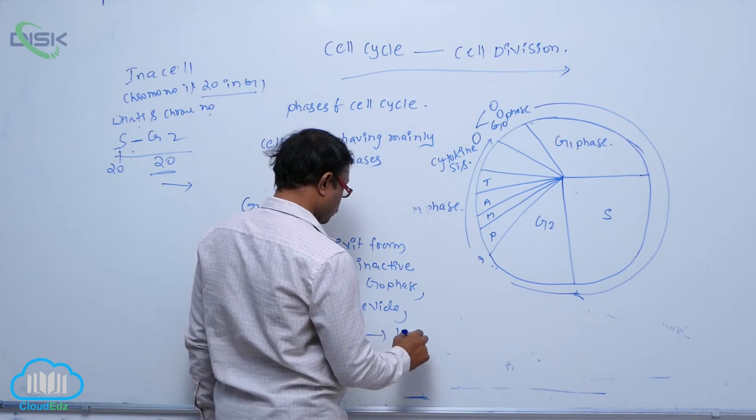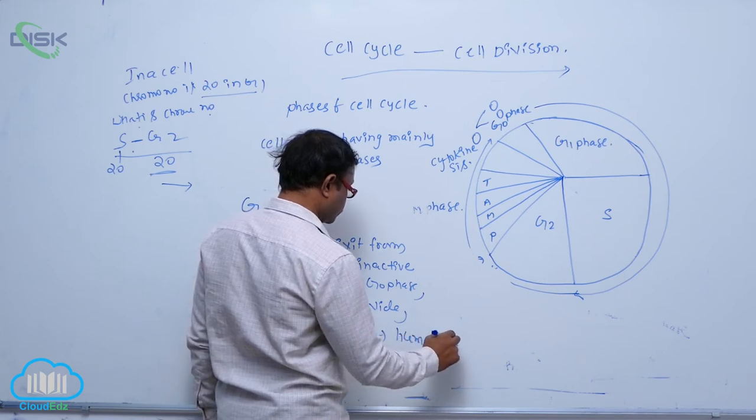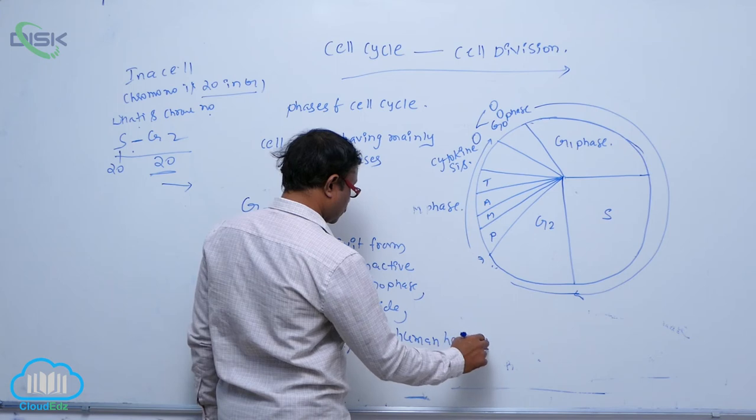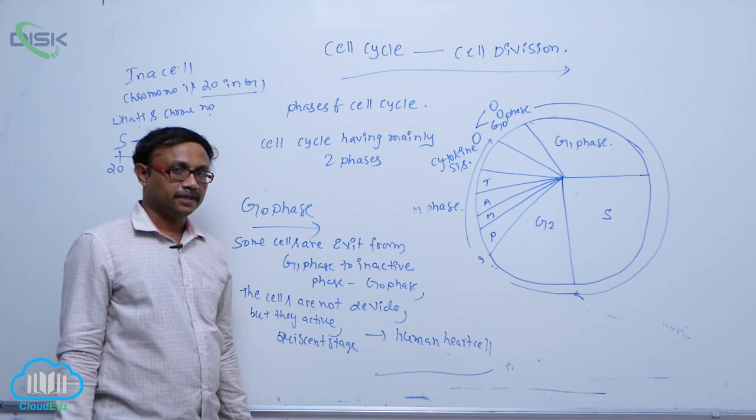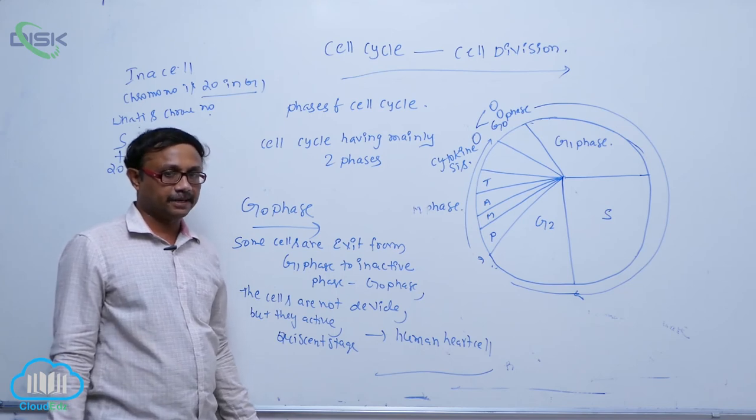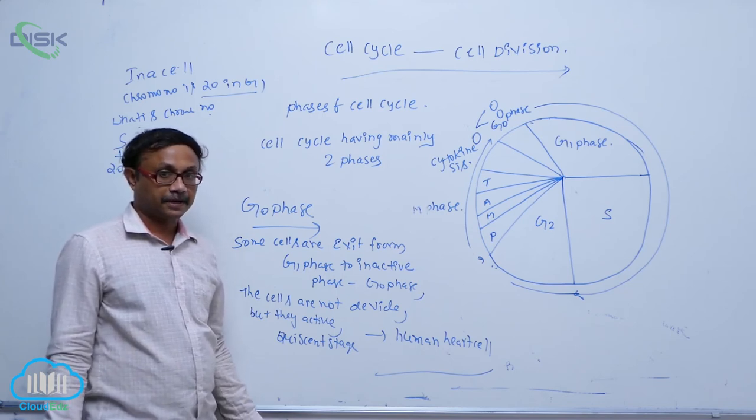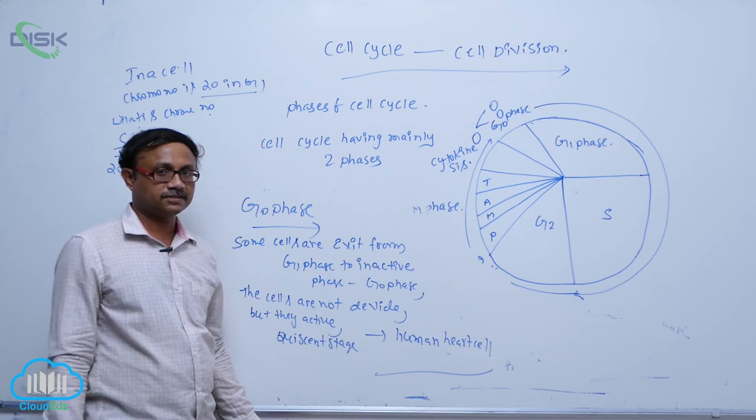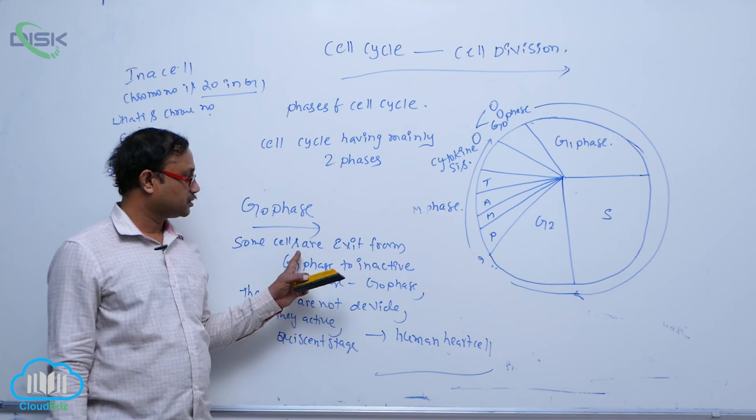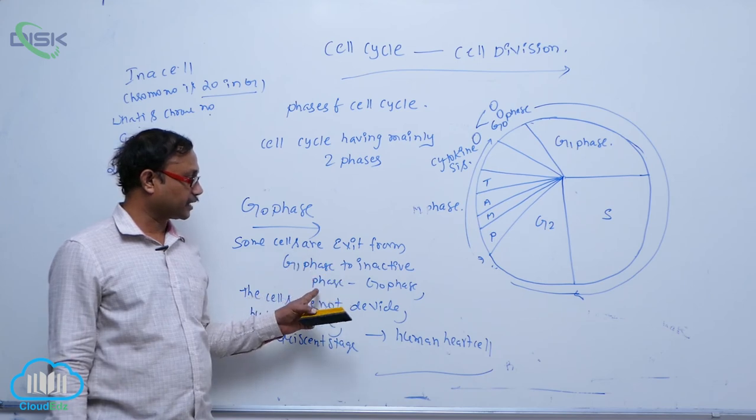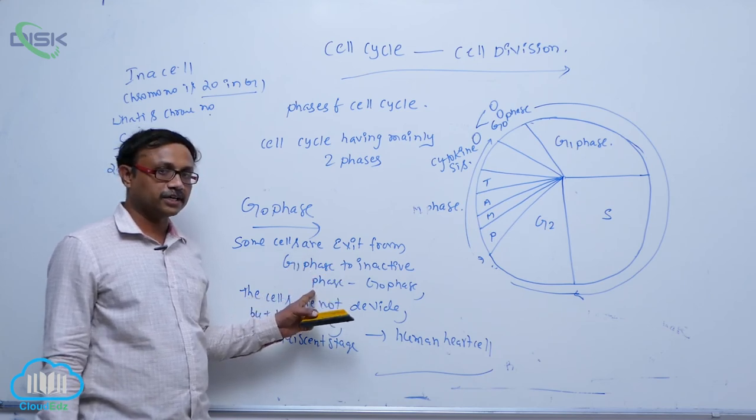Example: human heart cells. For example, in body of organism, if any part is damaged or injured for replacing loss of the cells, from the G0, some cells are activated and undergo cell division.